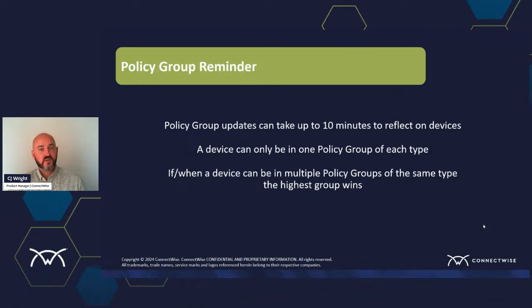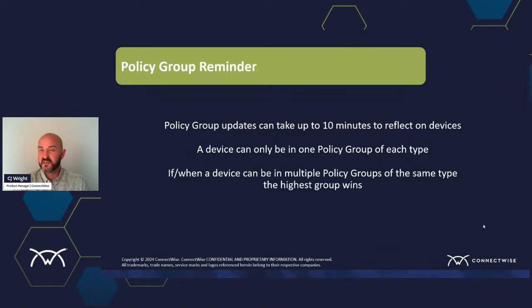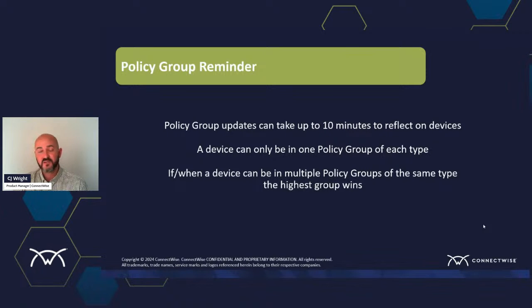A couple of things to be aware of: whenever you're working with policy groups, it can take up to 10 minutes for updates to actually reflect on your devices. The reason is that we have something running in the background within the ASIO platform to recalculate and cascade out the membership of those groups. Real-time changes can be problematic to pass through the system on an extremely timely basis, and we also want to make sure an accidental change doesn't immediately trigger removal of something. Those safeguards are in place for scalability and for your protection.